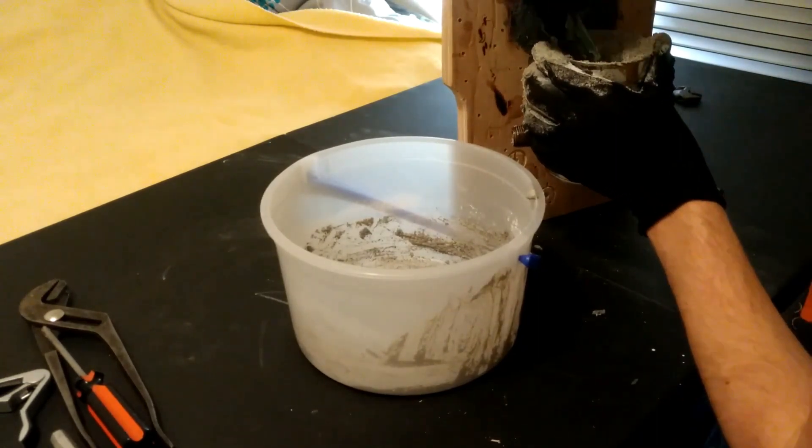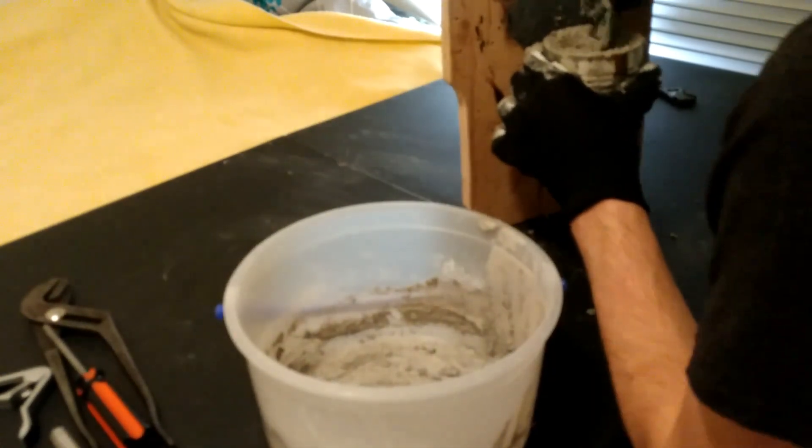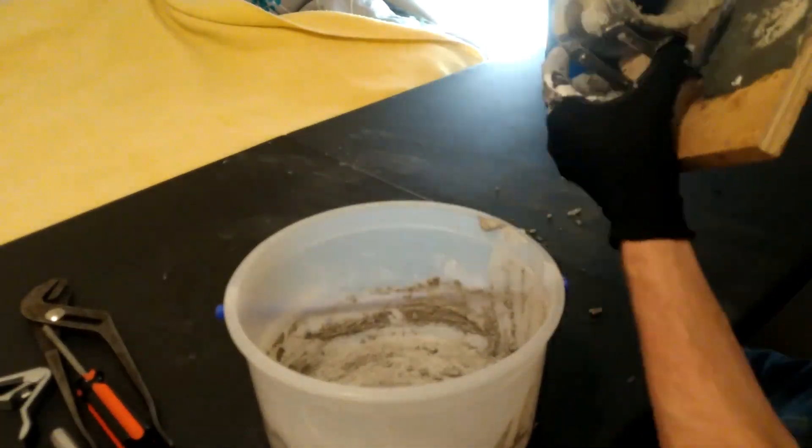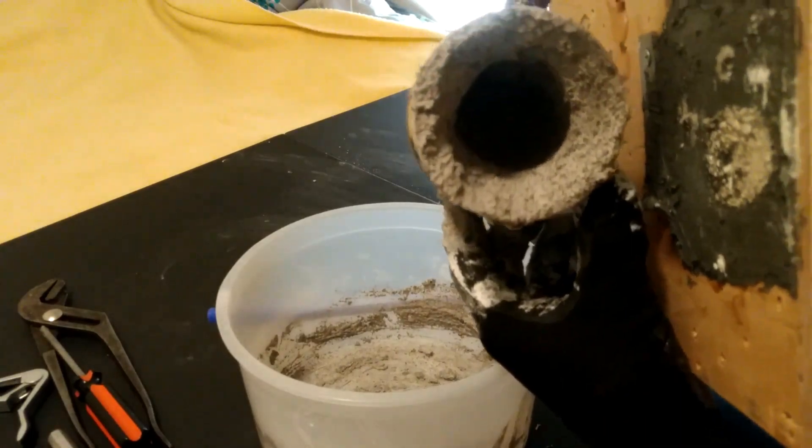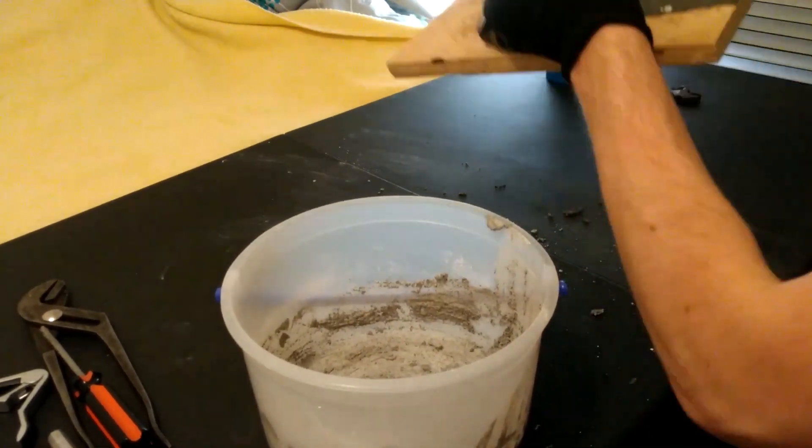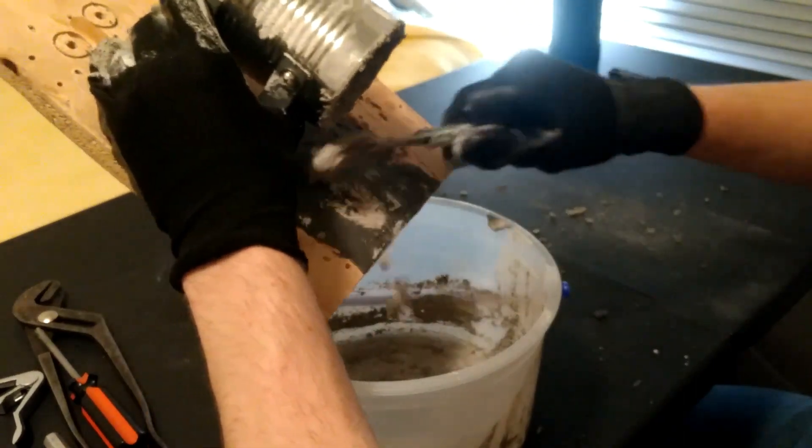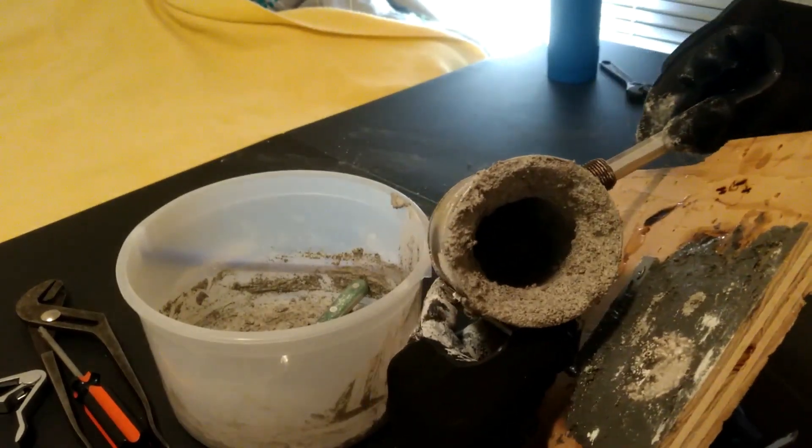The plaster started to set pretty quickly and became a lot less soupy and more firm. So once I got it to this basic shape, I just went through and was able to scrape with the spoon rather than actually forming. One last step you've got to do before you can cure the forge is to pop out the little plug that will have formed instead of the pipe nipple.